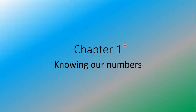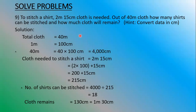Hello students, welcome to today's session. We are continuing with our word problems. The ninth question we are going to do today. The question is: to stitch a shirt, 2m 15cm of cloth is needed. Out of 40m of cloth, how many shirts can be stitched and how much cloth will remain? Here, the data is given — convert it into cm.